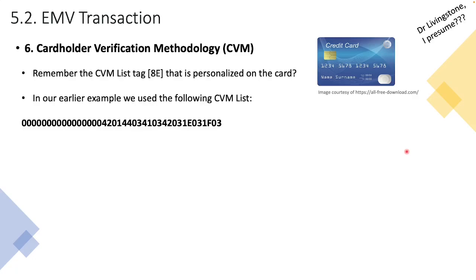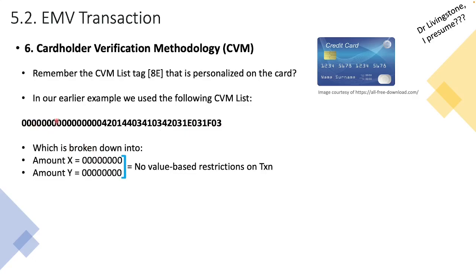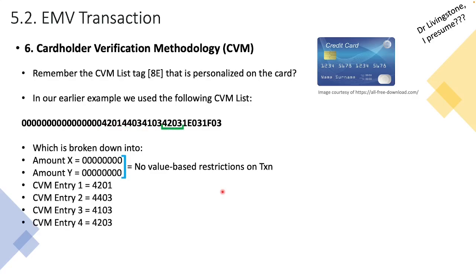Using a sample CVM list, let's assume it lives on Bob's card. Half of the leading zeros represent Amount X and the other half Amount Y, which means this card has no specific CVM rules based on transactional value. Then we have CVM entry one: 4201; CVM entry two: 4403; CVM entry three: 4103; CVM entry four: 4203; and so on. This card supports six different CVM types.